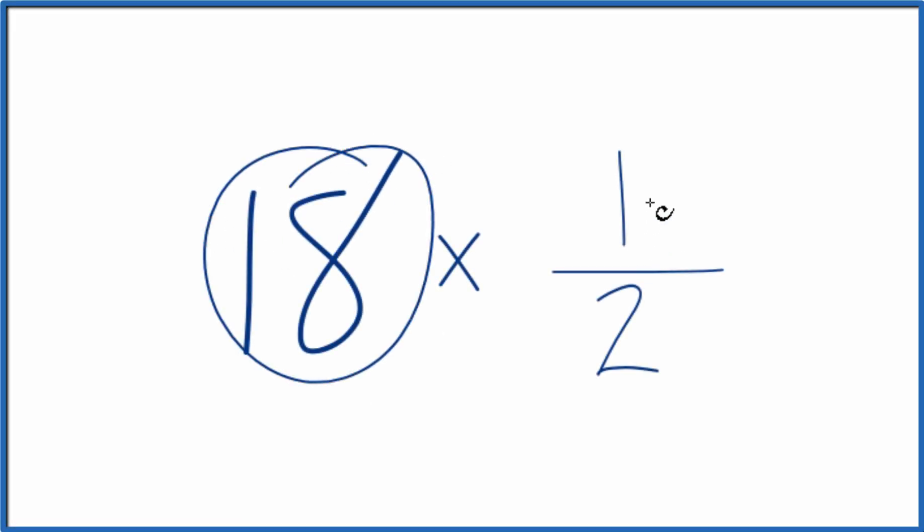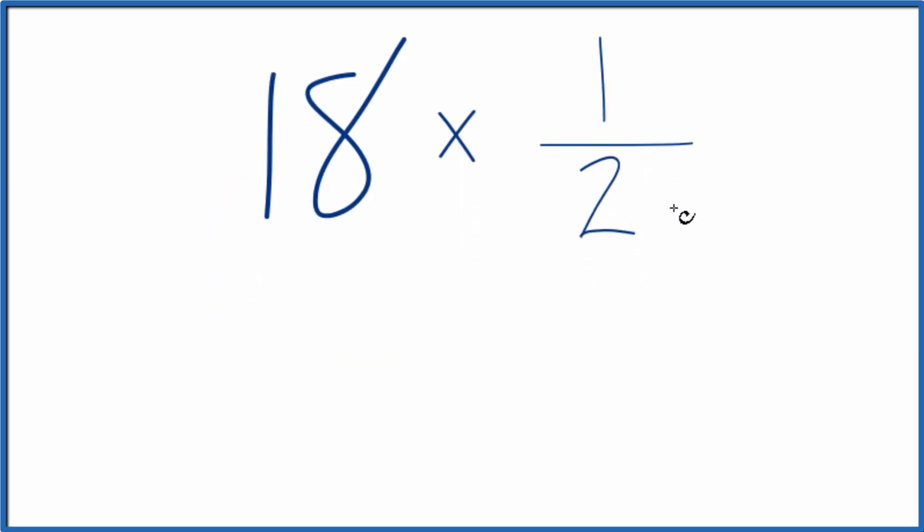Here's how you multiply 18 by 1 half. So you could take 1 half and add it together 18 times. That would give you the correct answer for 18 times 1 half.